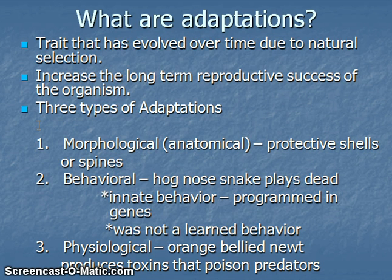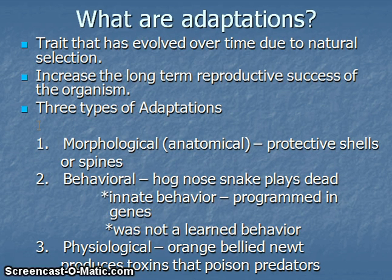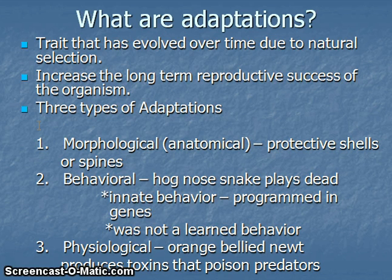Physiological adaptations are chemical adaptations where molecules are involved. From the video The Eternal Arms Race, we saw the orange-bellied newt, or the Taricha newt — an amphibian which produces toxins so poisonous to predators that a single Taricha newt carries enough toxin to kill many people. Another example of physiological adaptation is the hognose snake: as it plays dead, it emits a really foul odor, mimicking the smell of decomposing flesh, adding to the trickery that it is already dead.